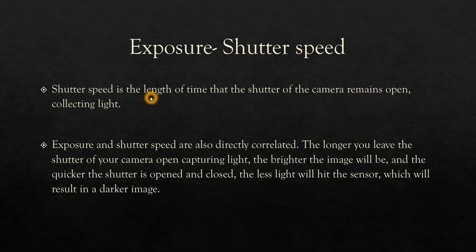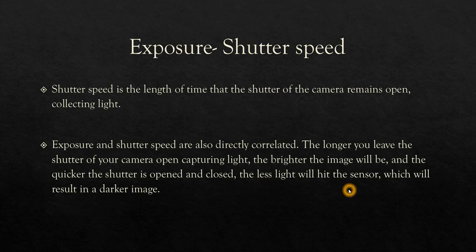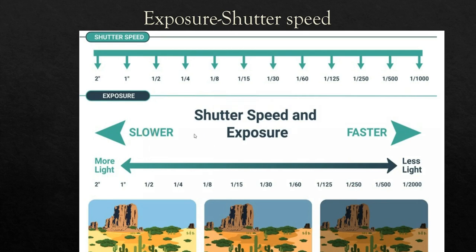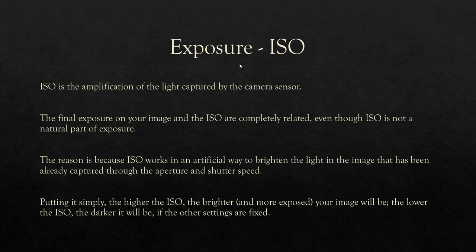Shutter speed is the length of time that the camera shutter remains open collecting light. The longer the shutter is open, the more light falls on the camera sensor and the brighter the image will be. If the shutter is very quick, less light hits the sensor, resulting in a darker image. If your shutter press is slow, more light falls on the sensor giving a brighter image, whereas capturing images very quickly results in a darker image.